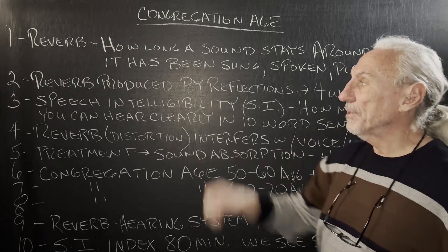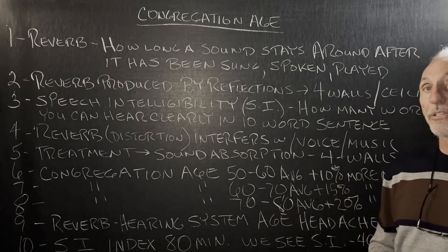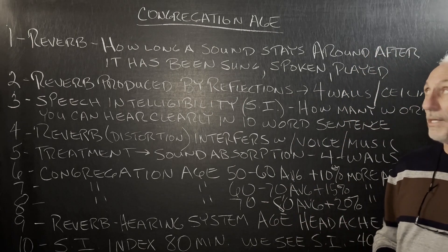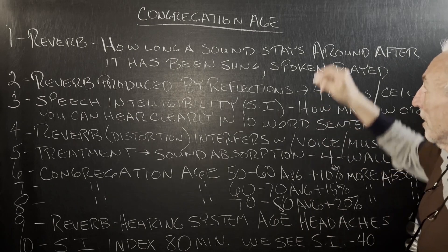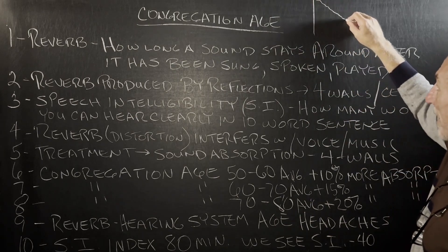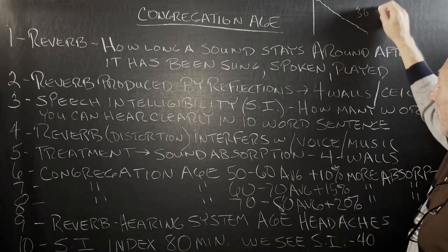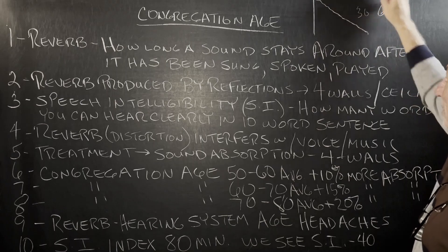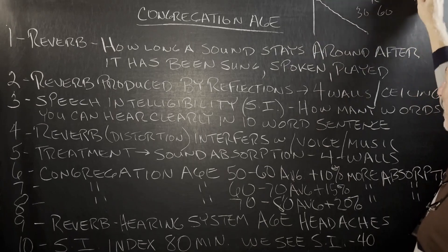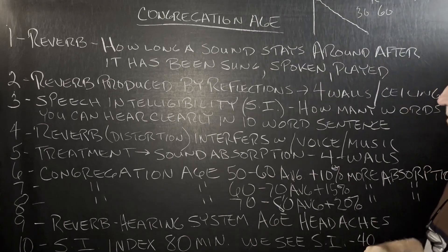Reverb is defined as how long a sound stays around in the room after it's been sung, spoken, or played. It's really a measure of decay — that's where we get the RT30 and RT60. It's a measure of decay over those intervals.